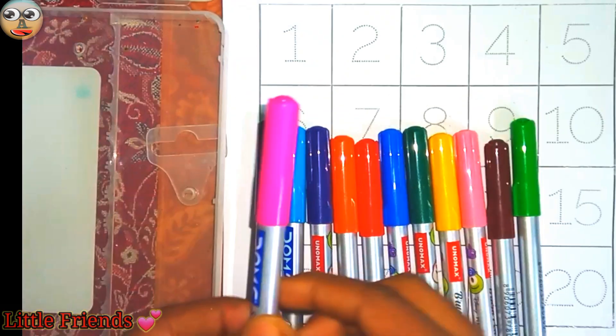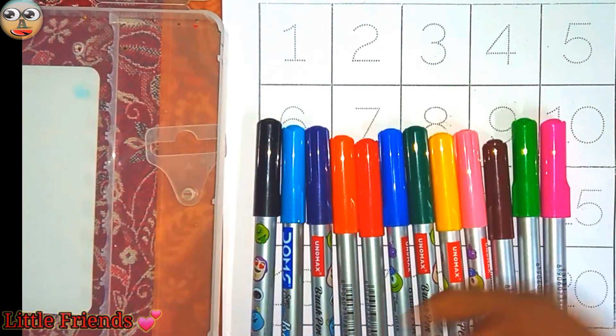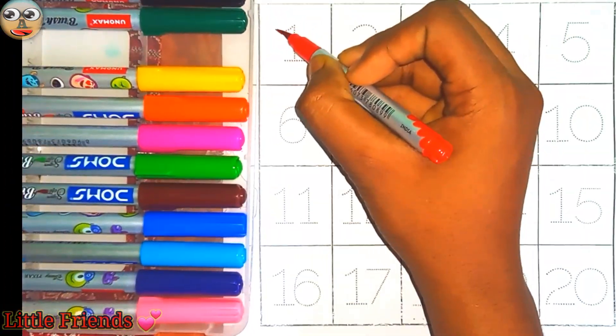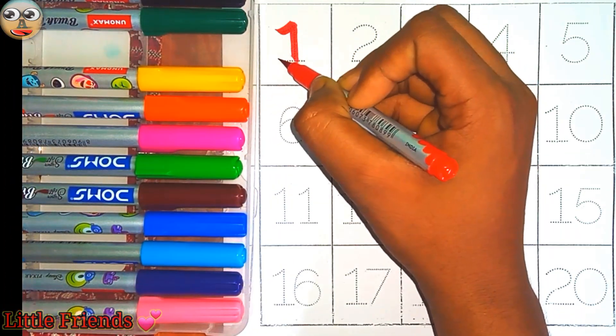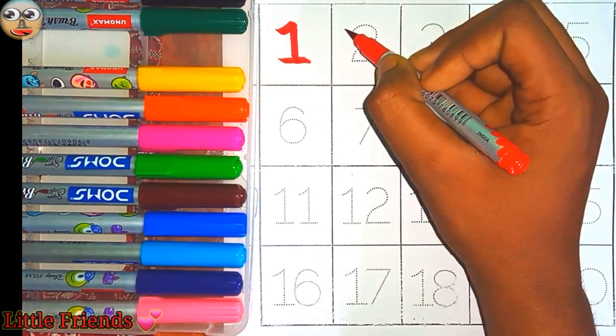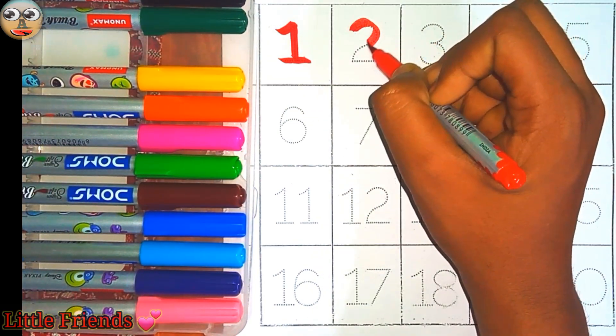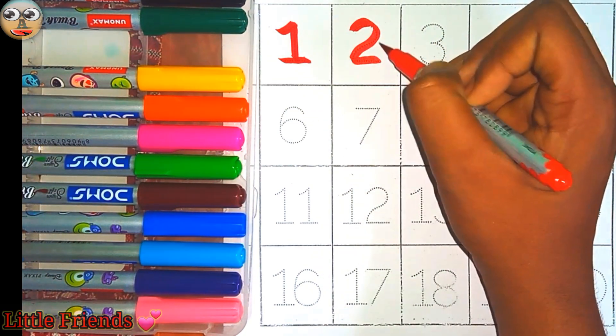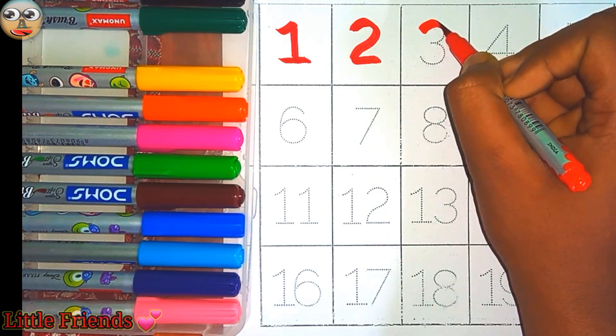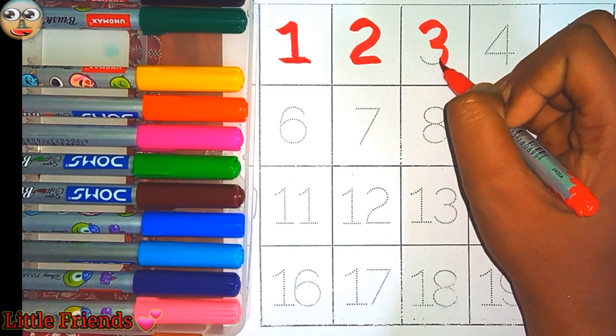And this is pink color. Let's start the class. One, this is one. Two, this is two. Three, this is three.